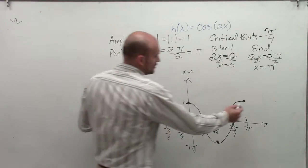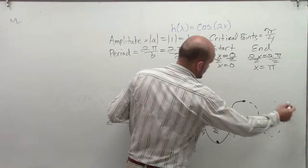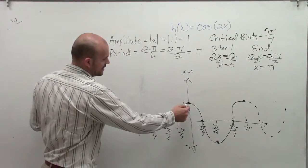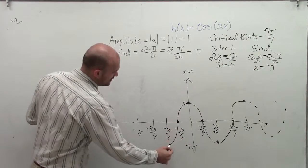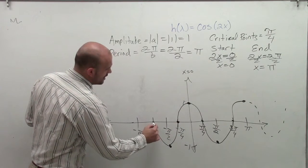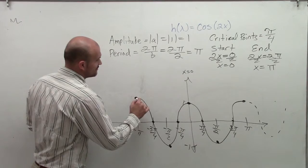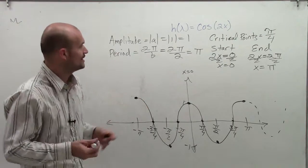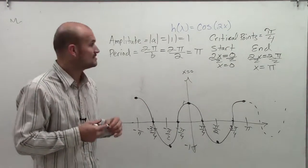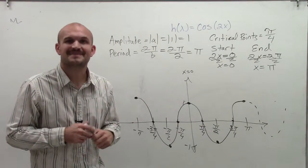Now continuing this graph, you could keep going in the positive direction, or we can also continue it in the negative direction. By continuing in the negative direction, we're going to have critical points at these values. There you go, ladies and gentlemen. That's how you graph the cosine graph of 2x. Thanks.